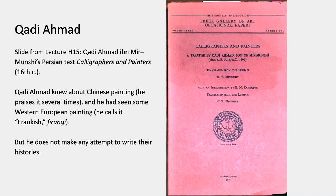This is Qadi Ahmad, which we saw in Lecture 15, the 16th century Persian text called Calligraphers and Painters. Qadi Ahmad knew about Chinese painting — he praises it a couple of times — and he had also seen some Western European painting, which he calls Frankish, but he doesn't make any attempt to write their histories. He's not interested in them. They're not part of the Islamic tradition, and also it's not a concept in this book that you would want to or need to write the history of art of the whole world.